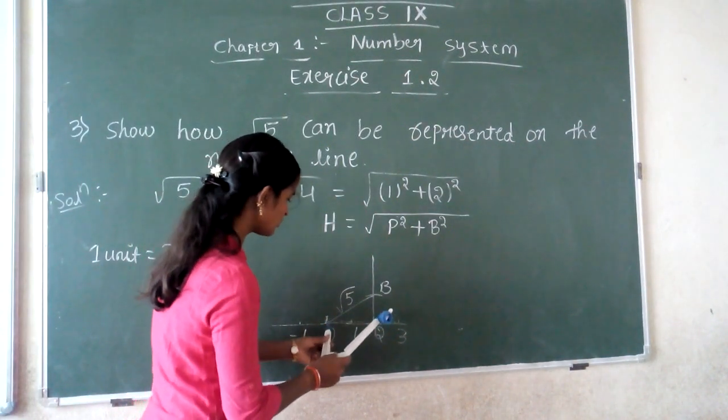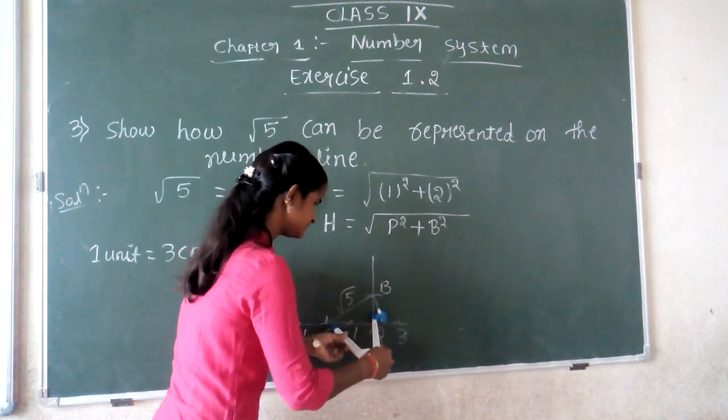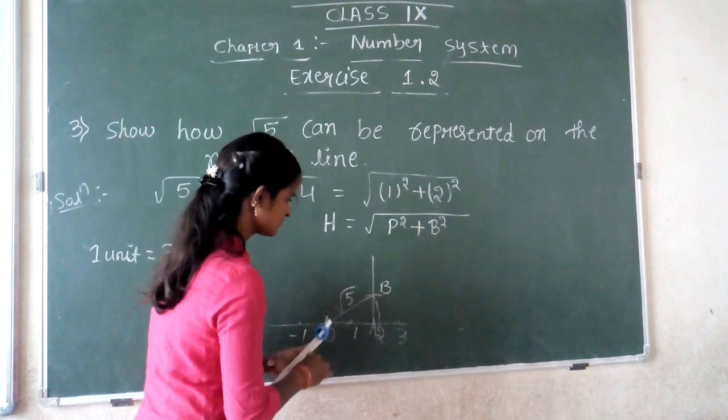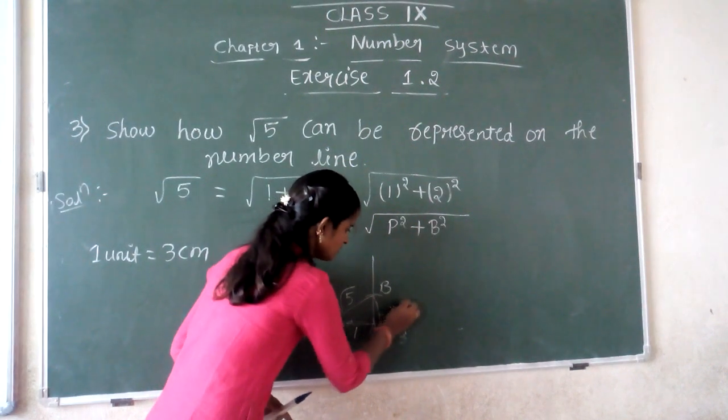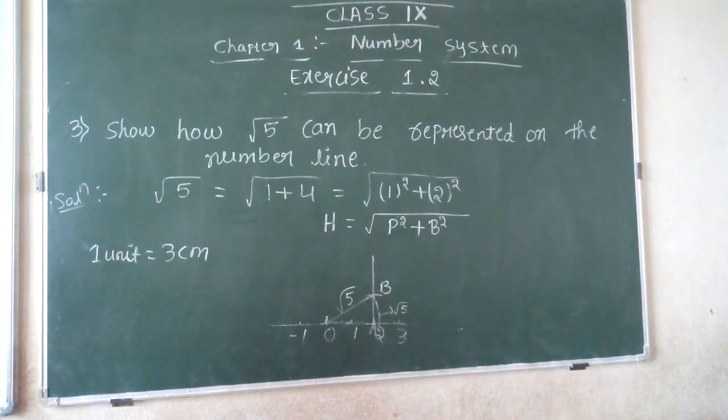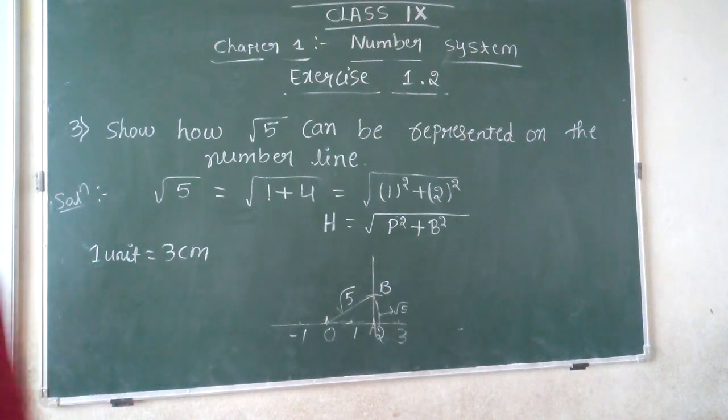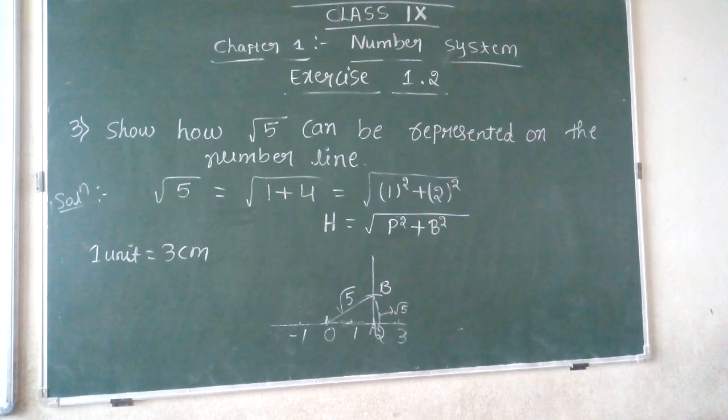Using the compass with radius OB, draw an arc on the number line. This point is √5. Therefore, √5 is represented on the number line. Thank you.